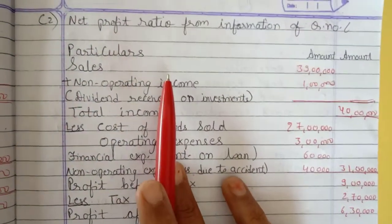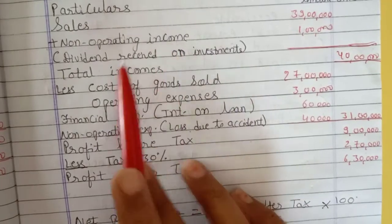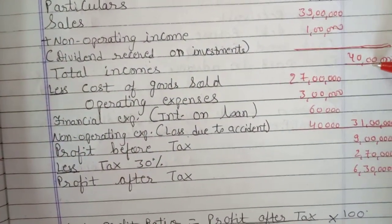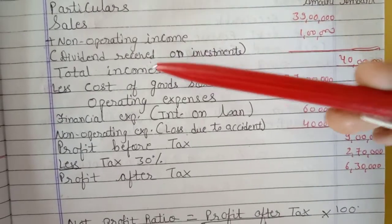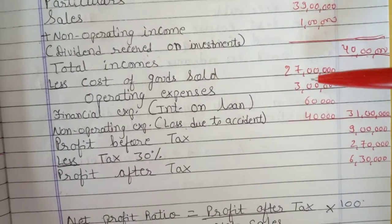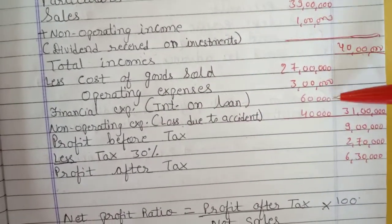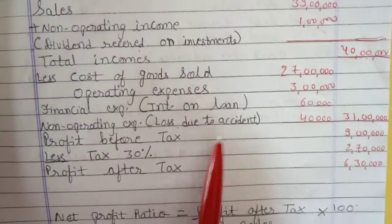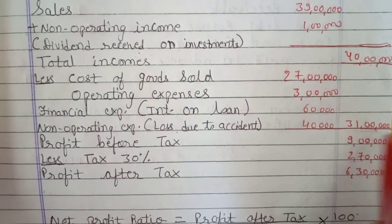Now we calculate from question number 6. First, sales plus non-operating income — dividend received on investment — gives total income of Rs. 40,00,000. Deducting expenses: cost of goods sold Rs. 27,00,000, operating expenses Rs. 3,00,000, financial expenses (interest on loan) Rs. 60,000, and non-operating expenses (loss due to accident) Rs. 40,000 — giving total expenses of Rs. 31,00,000.